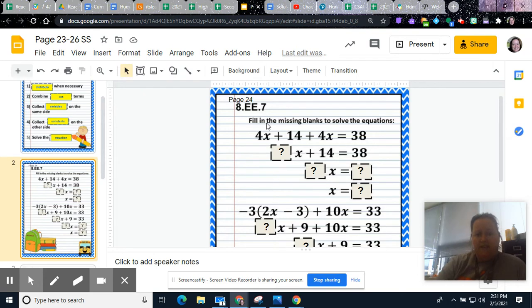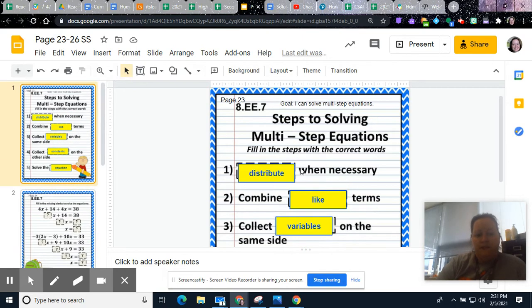So it says fill in the missing blanks to solve the equation. So we have 4x plus 14 plus 4x equals 38. So step one, it says to distribute. Well, you will not have to distribute unless you see parentheses in your equation. So we'll go to step two, combine like terms.